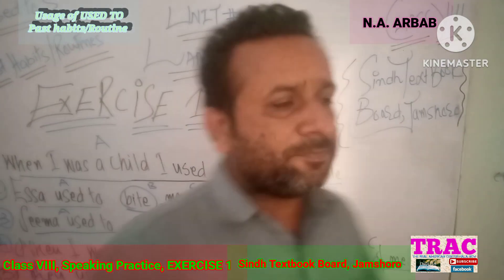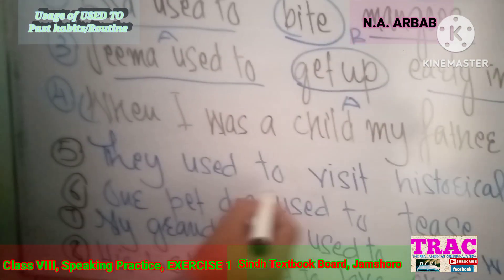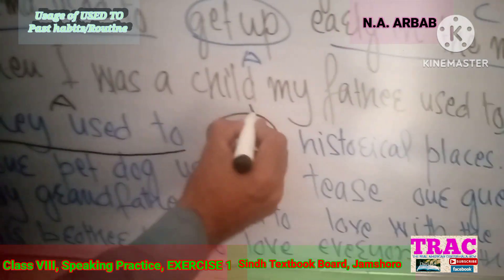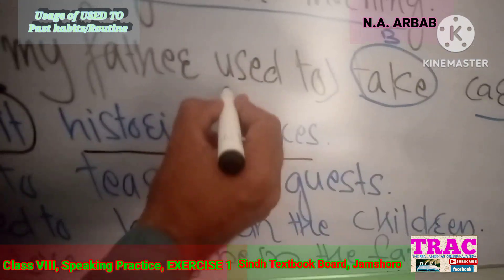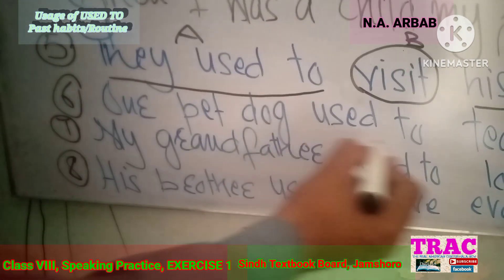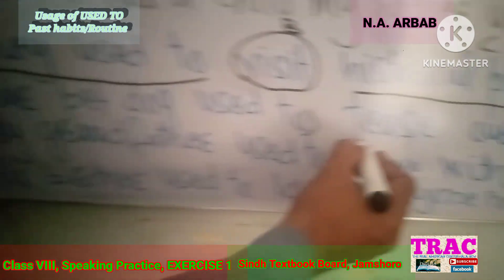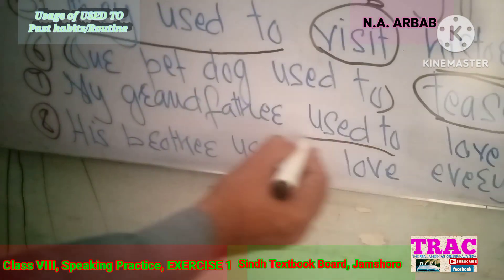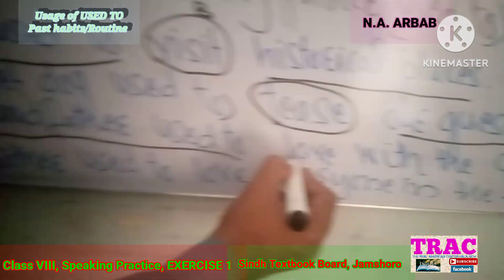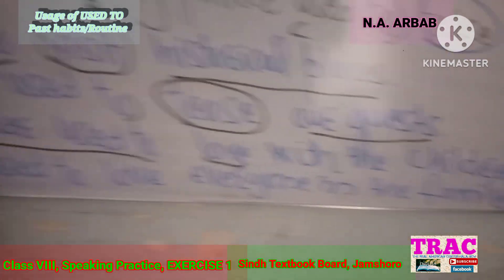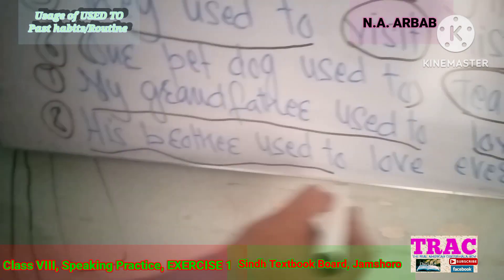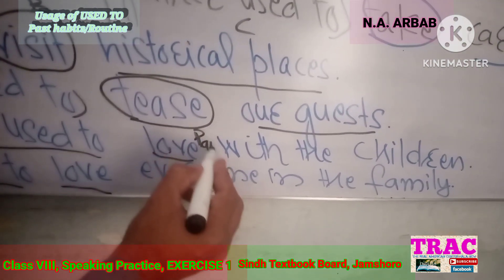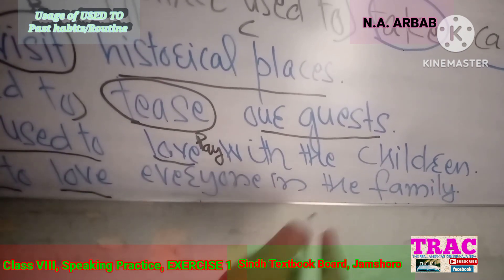Number five: 'They used to visit' — Part A; 'visit' — Part B; 'historical places' — Part C. Number six: 'Our pet dog used to tease' — Part A; 'tease' — Part B; 'tease our guests' — Part C. Number seven: 'My grandfather used to love the children, his brother used to love everyone in the family.'